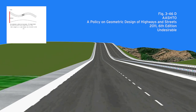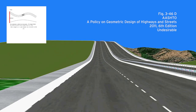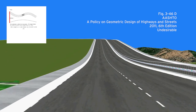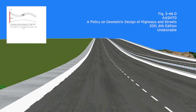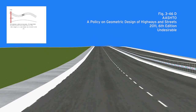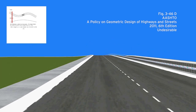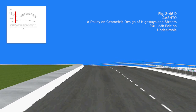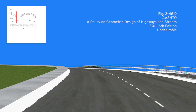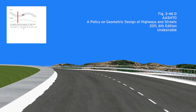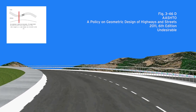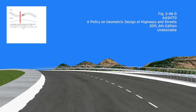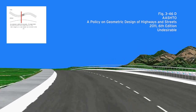Figure D is a horizontal S-curve superimposed on a vertical ridge. The tangent between the horizontal curves is too short, and the second horizontal turn occurs just after cresting the vertical curve.